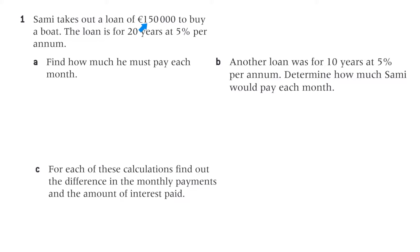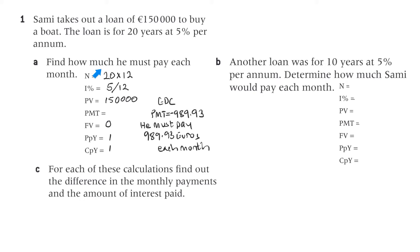Question one. Sammy takes out a loan of 150,000 euro to buy a boat. The loan is for 20 years at 5% per annum. Part A: find how much he must pay each month.